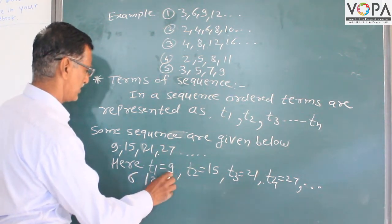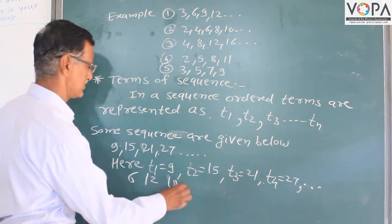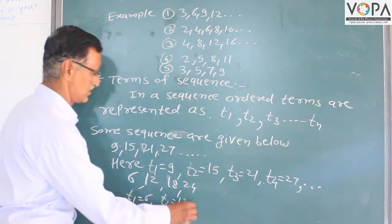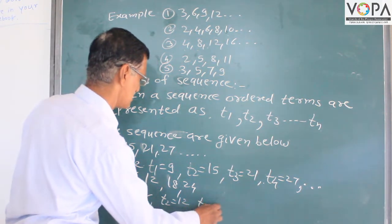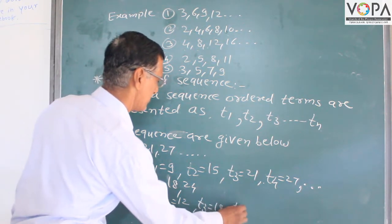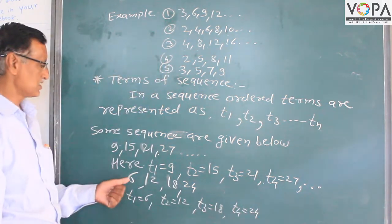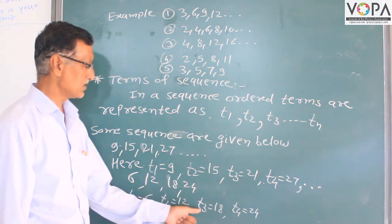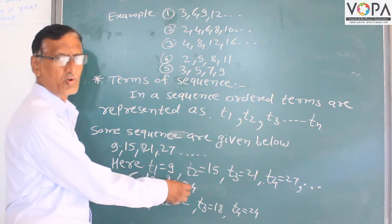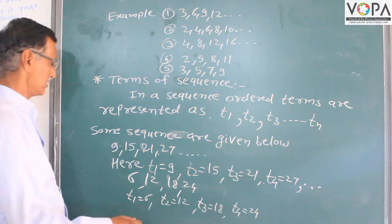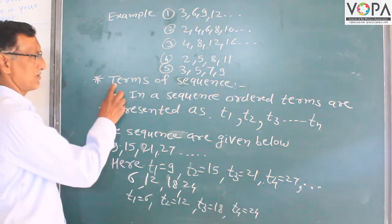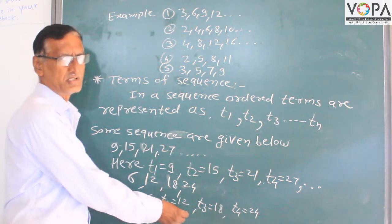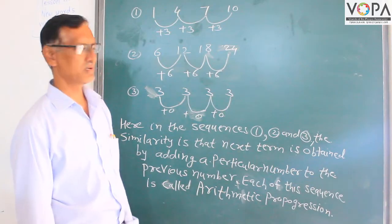Another example of terms: for the sequence 6, 12, 18, 24 — T1 equals 6 (first position), T2 equals 12 (second position), T3 equals 18 (third position), and T4 equals 24 (fourth position). The terms of a sequence mean T1 is the first term, T2 is the second term, T3 is the third term, and T4 is the fourth term.